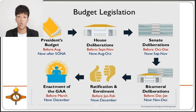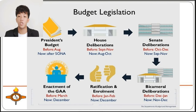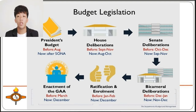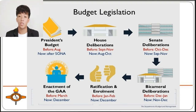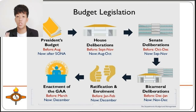Once both houses of Congress have finished their deliberations, they each constitute a panel to the bicameral conference committee. This committee discusses and harmonizes the conflicting provisions of the House and Senate versions of the General Appropriations Bill, producing a harmonized version. The harmonized version is then submitted to both houses which vote to ratify the final General Appropriations Bill for submission to the President. Once submitted to the President for approval, the General Appropriations Bill is considered enrolled.